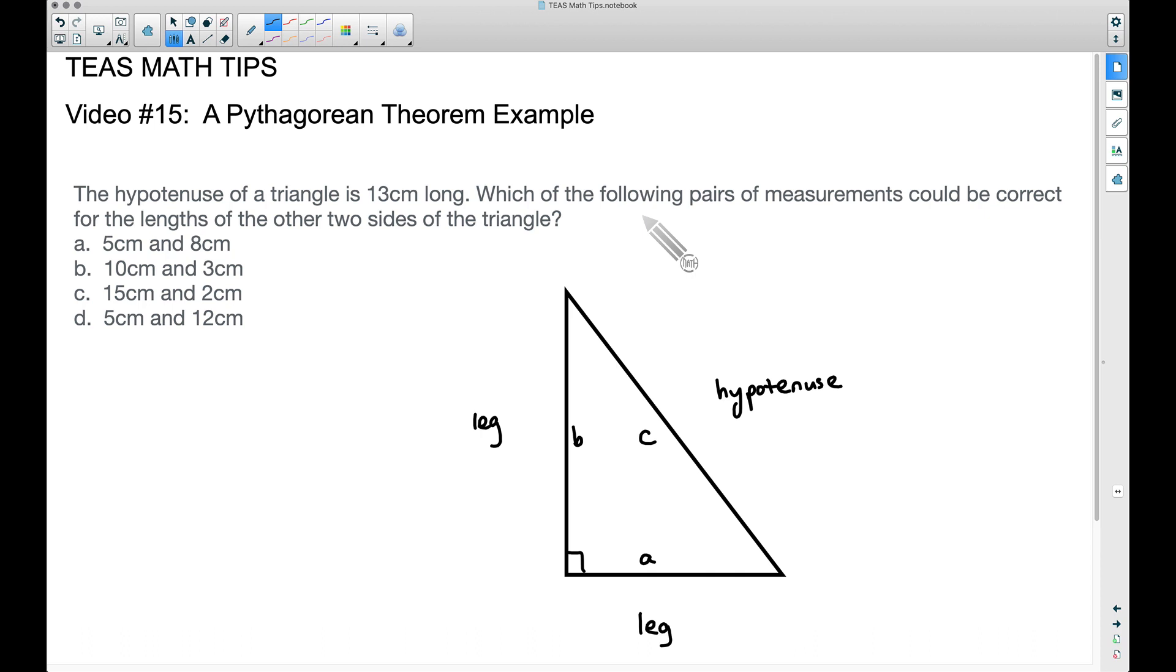Got this question from a student, I just modified it a little bit, that way I wouldn't be directly copying but it's pretty much the same thing. The hypotenuse of a triangle is 13 centimeters long, which of the following pairs of measurements could be correct for the lengths of the other two sides of the triangle.